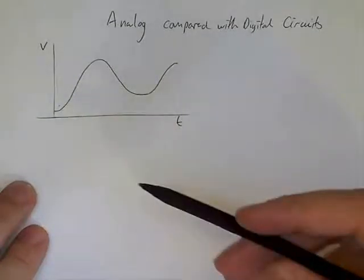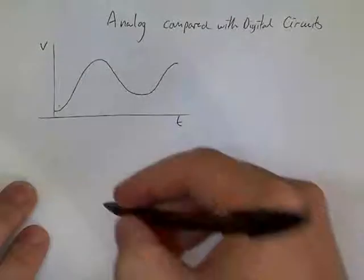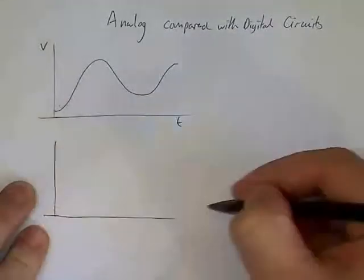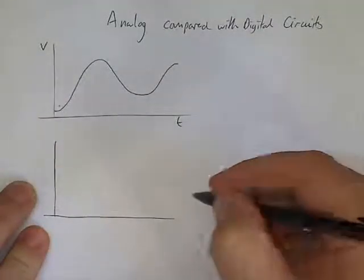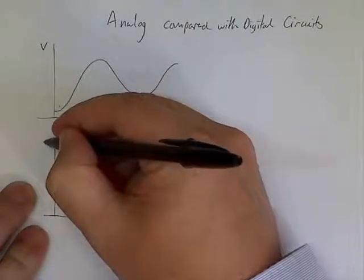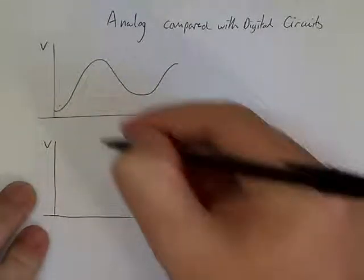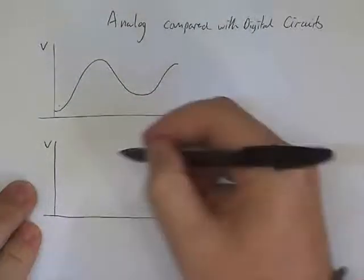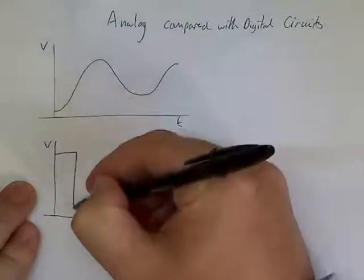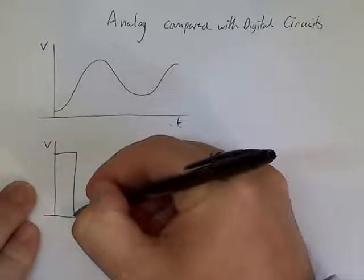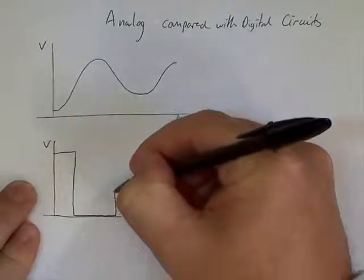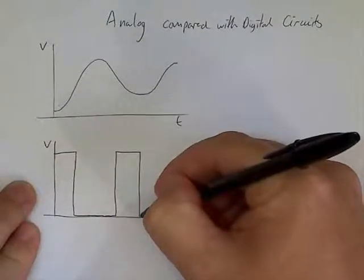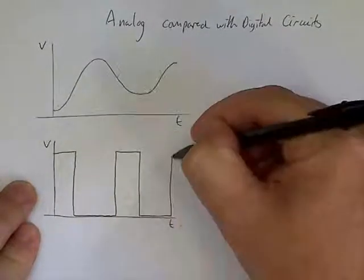This contrasts with a digital signal, where a digital signal can only take one of two particular voltages — two particular states. A voltage-time graph of a digital signal would look something like this, so it would be either on or off.